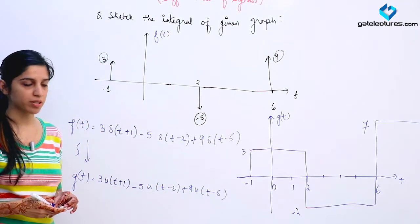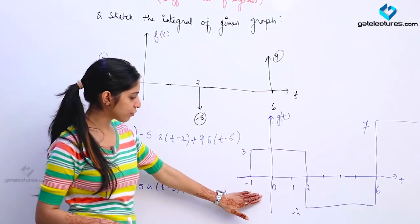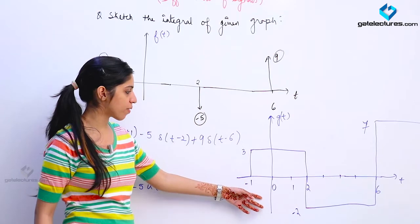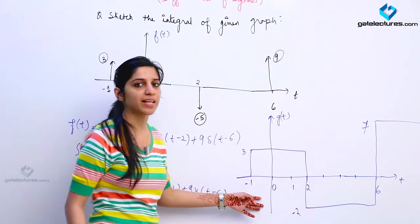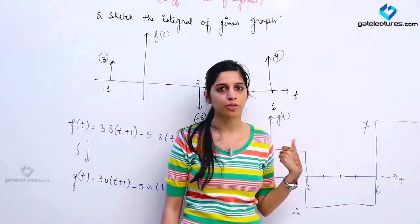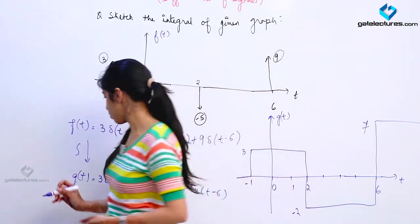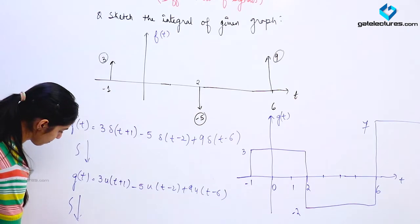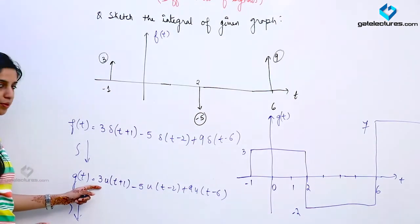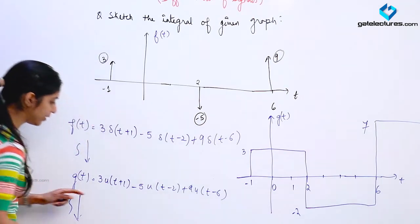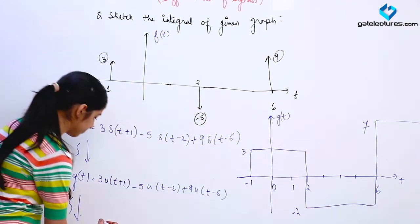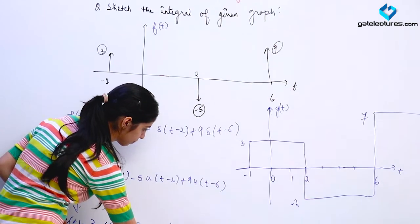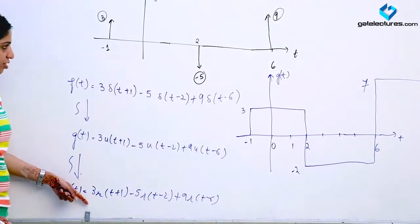Now if I ask you to find the integration of this step function g(t) — we know that any function consisting of steps, if you integrate it, you obtain a function of ramp type. So let us perform the integration of this function also, calling it y(t). The constant 3 remains the same, and integrating u(t) we obtain r(t), the ramp function.